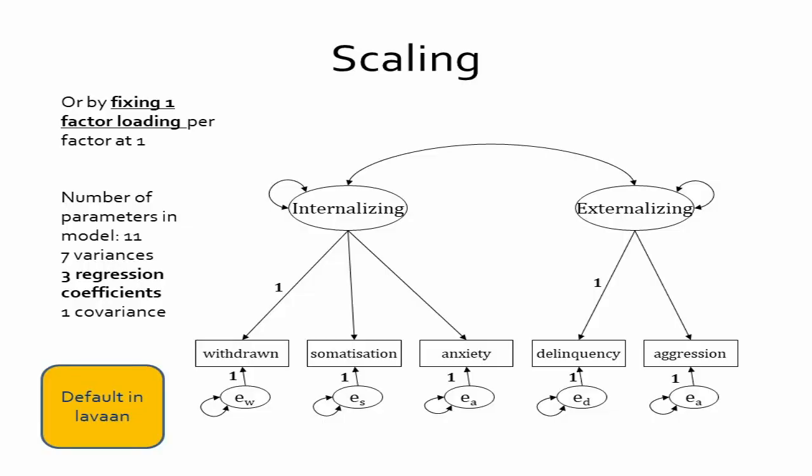It's also possible to scale latent variables by fixing one of the factor loadings for each latent variable to be equal to one. This does not change the number of parameters in the model. Instead of five regression coefficients we now have just three, because two have been fixed to one. But the variances of the latent variables are freed and now estimated — two parameters gained there. We've lost two regression coefficient parameters and gained two latent variable variance parameters, leaving the same total number of parameters.